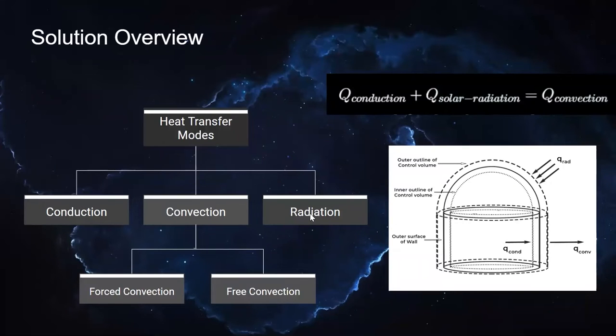All three heat transfer modes, conduction, convection and radiation exist in the problem. The outer wall loses heat to the environment through convection and gains heat from solar radiation as well as through conduction from inside the structure.